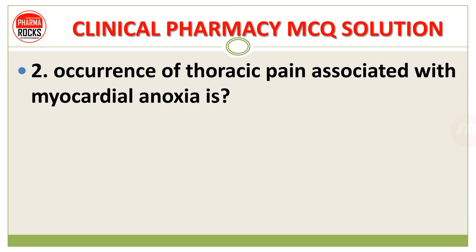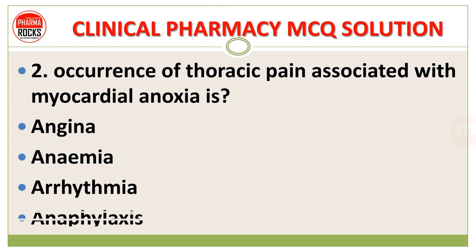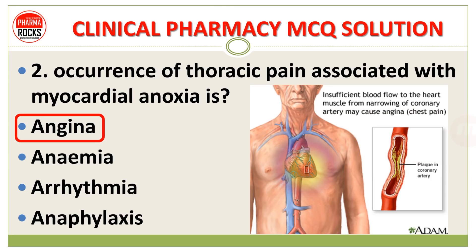Number 2: Occurrence of thoracic pain associated with myocardial anoxia — is it angina, anemia, arrhythmia, or anaphylaxis? The right answer is angina. Angina is what we call chest pain due to insufficient blood flow to the heart muscles, caused by narrowing of the coronary artery. Plaque formation in the coronary artery leads to insufficient blood flow and may cause chest pain — angina.